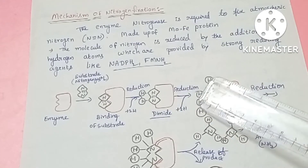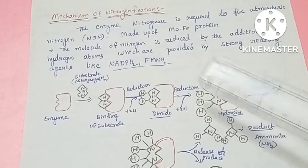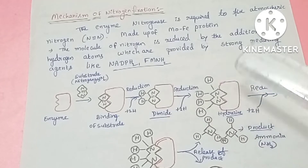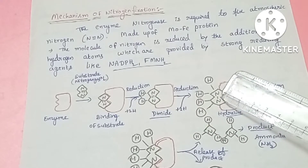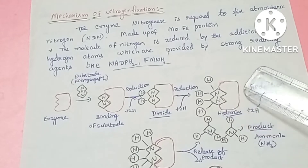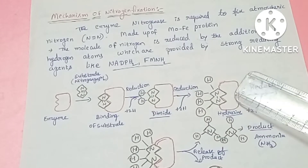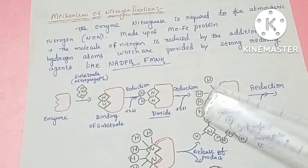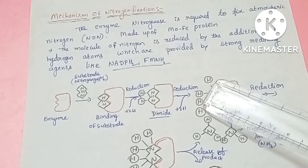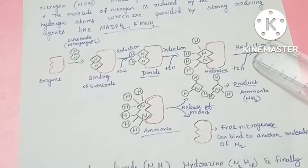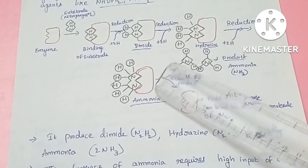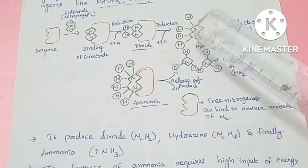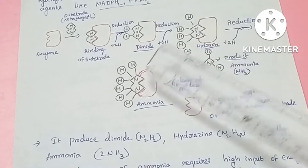Next, another reduction process takes place. Two more protons are added, reducing the molecule further from two covalent bonds to one covalent bond. This diazene is then converted to hydrazine, N₂H₄. Again, the reduction process takes place and two more protons are added, finally breaking the remaining covalent bond.